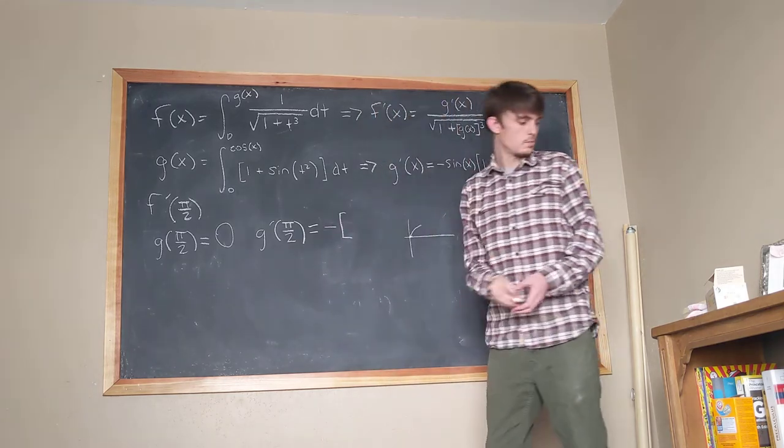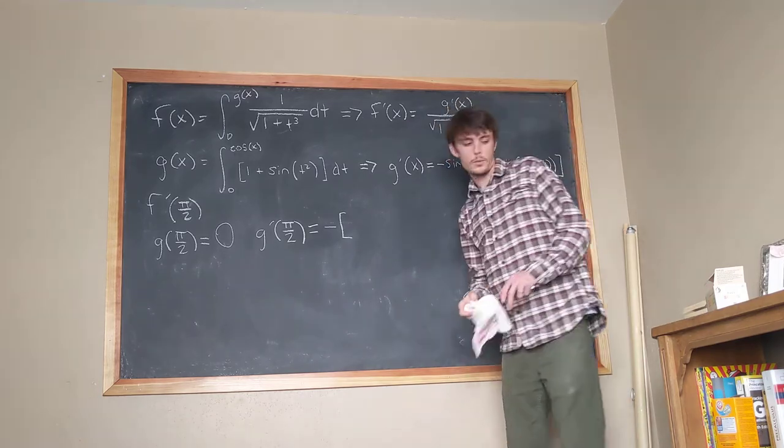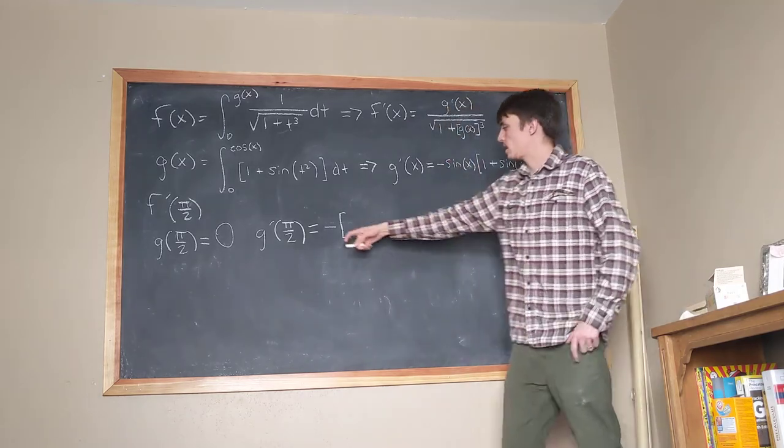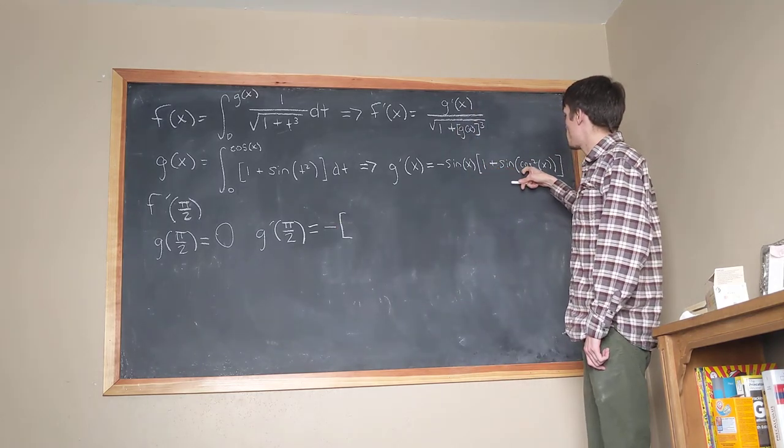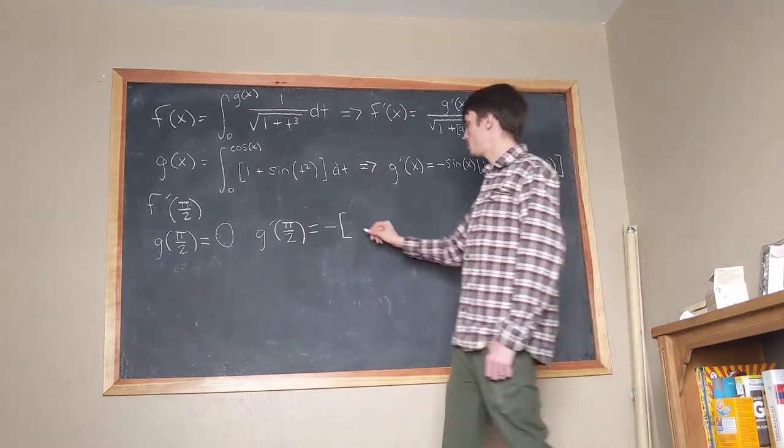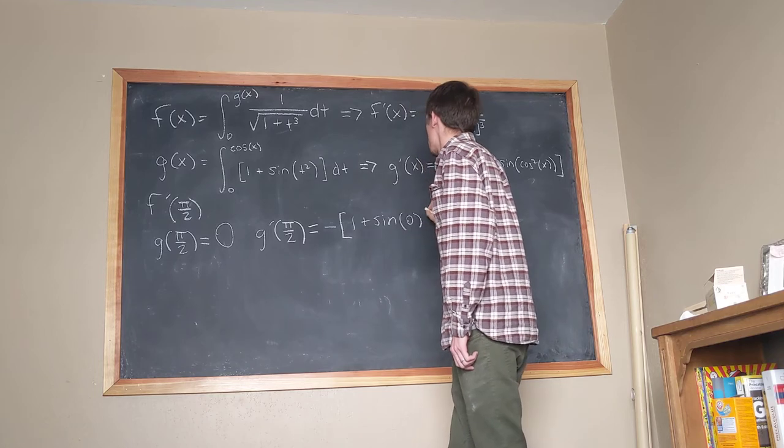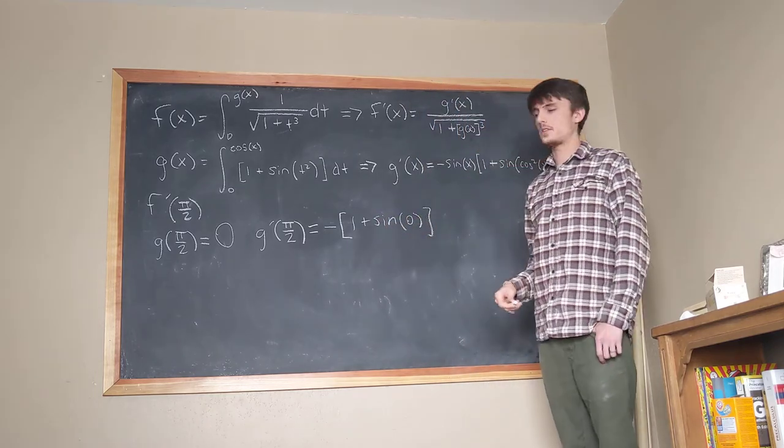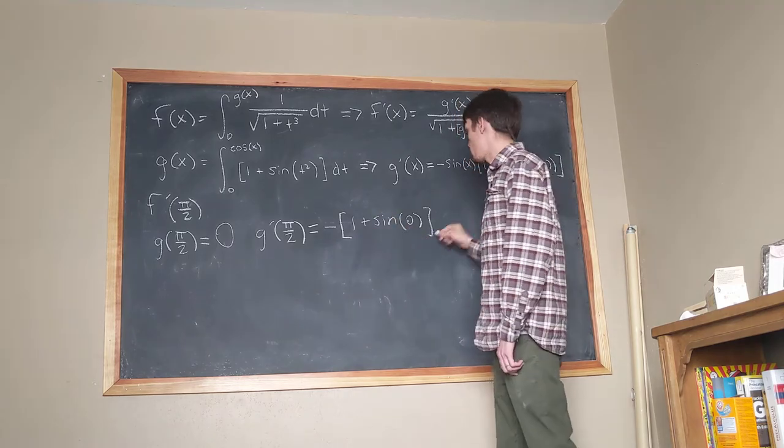Negative bracket. 1s are kind of mysterious creatures that can appear and disappear at will. So we have a negative 1 out here, and then inside the brackets we get 1 plus sine of cosine squared of pi over 2, but that's just going to be 1 plus sine of 0, as we saw before, but 1 plus sine of 0 is 1 plus 0, and 1 plus 0 is 1, we get negative 1.